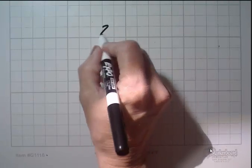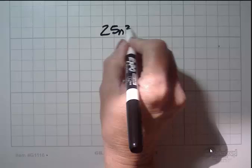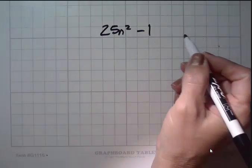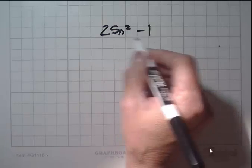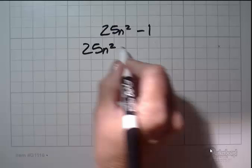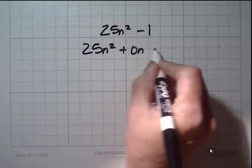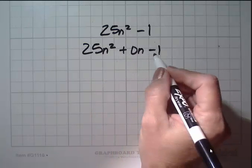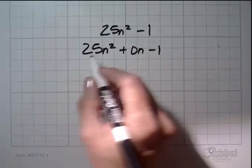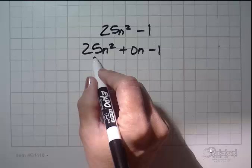So the first problem we're going to do, and it's a relatively simple one, or it looks relatively simple at first, is 25n squared minus 1. Now you've not seen a problem like that before, so we're going to rewrite it so that it looks familiar, 25n squared plus 0n minus 1. Now that looks more like the expressions you're used to seeing, where you have an n term in there.